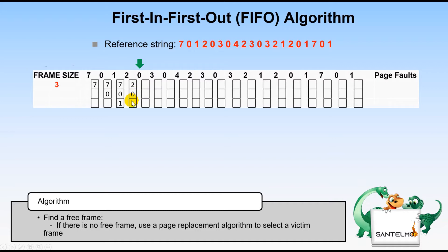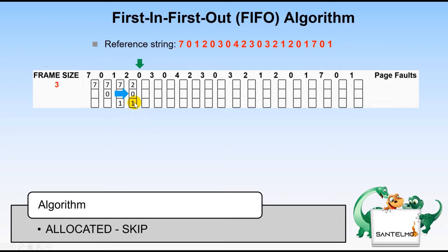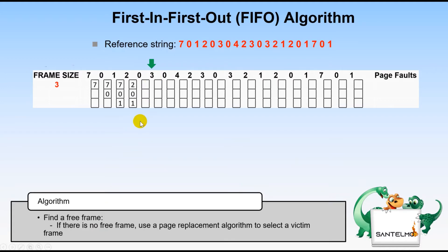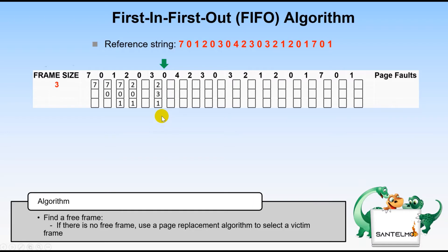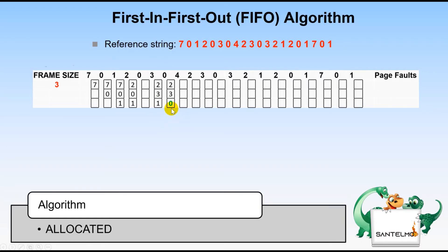Next, allocate 0 — but 0 is already allocated, so we skip it. Next page is 3. We choose the victim, which is 0 (first in), and replace 0 with 3. Then allocate 0 — no free frame, so we choose the victim, which is 1 since 1 was the first one to come in. We replace 1 with 0.